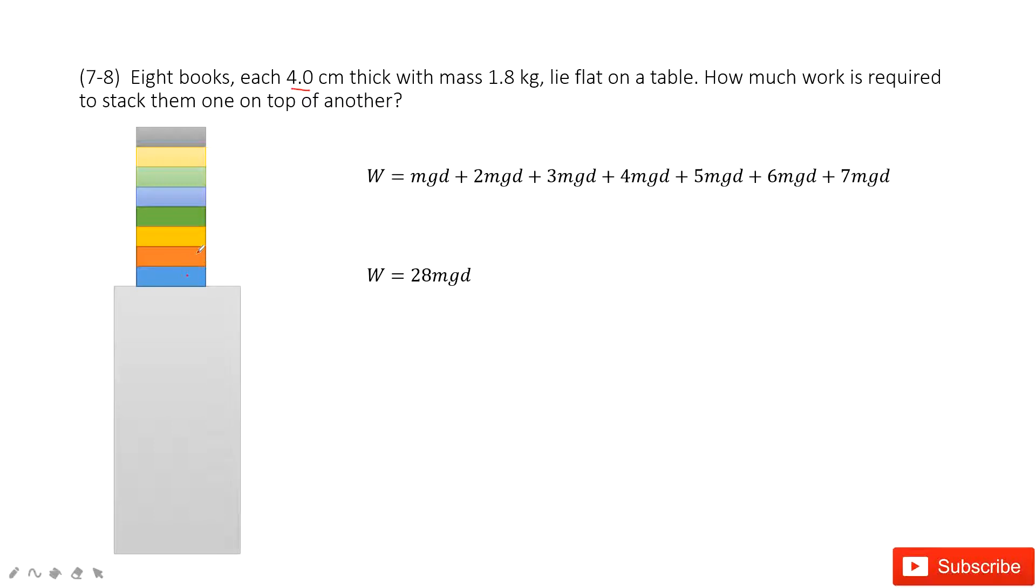The second book, we put it on top of the first one. So this is mg. The distance moved is d, the thickness. For this book, it has the gravity, and also the force F acted by the person. This force equals the gravity because it moves at constant speed.